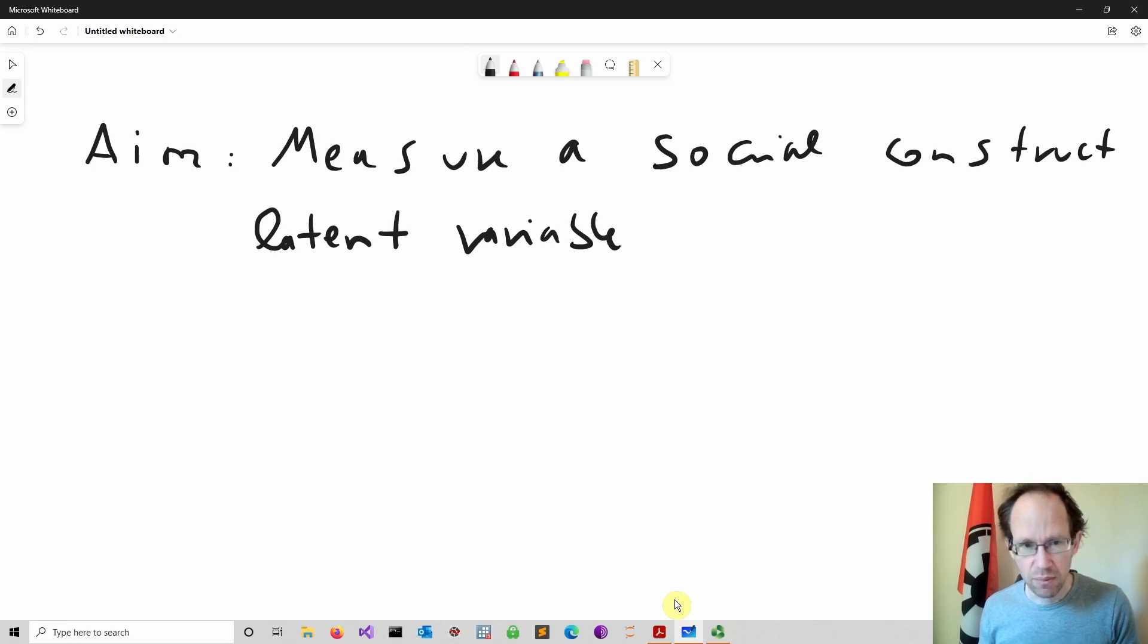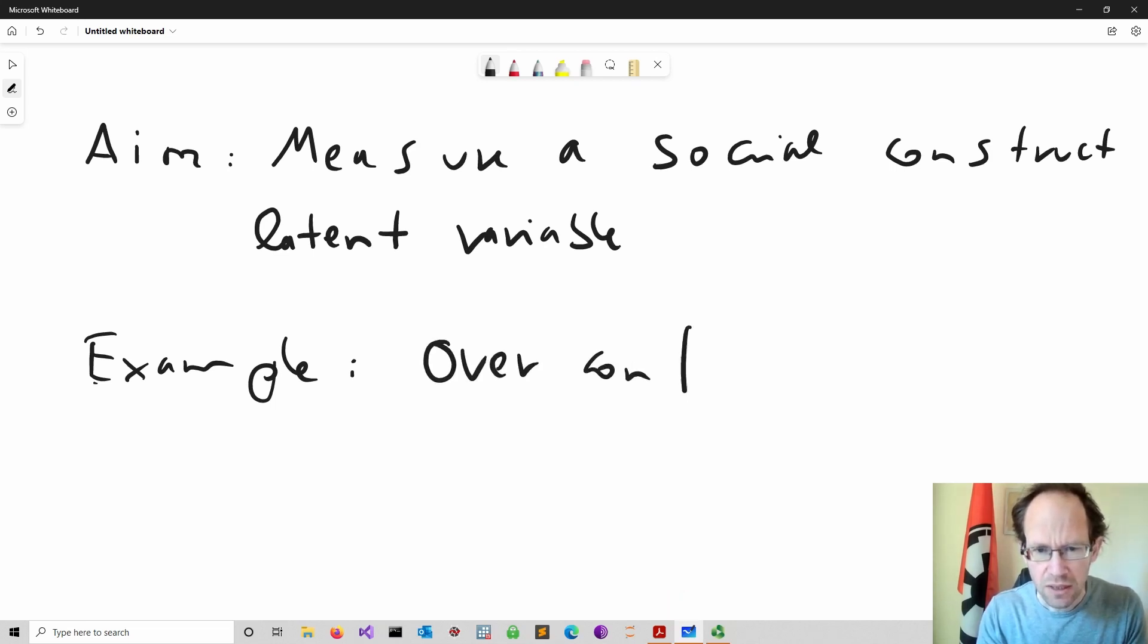However, in other cases that is not really true. An example which is very common in the literature is confidence or overconfidence. There is a whole literature in management that argues that overconfident decision makers, CEOs, make poor decisions. The issue is how do we measure overconfidence?